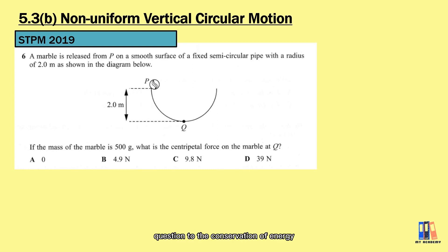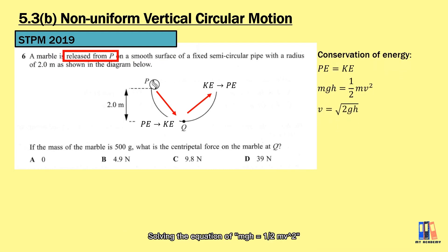Well, we can connect this question to the conservation of energy. The marble is released from P which is 2 m above the position Q. There is conversion of energy from potential to kinetic energy. Solving the equation of mgH equals half mv squared, we can obtain the velocity at Q is 6.26 m per second. And then, we can apply the formula of centripetal force mv squared over r. The centripetal force equals 9.8 N in this case.